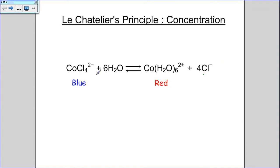So the system must reduce the H2O in the solution. And in order to do that, the H2O will react with the CoCl4 ions to favor the forward reaction. And as a result, Co(H2O)6 2+ ions are formed and 4Cl- are formed.